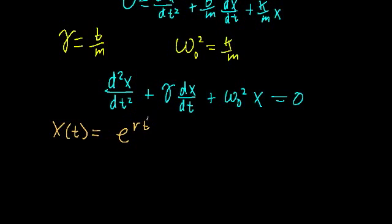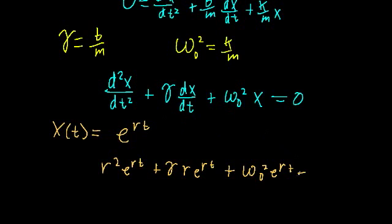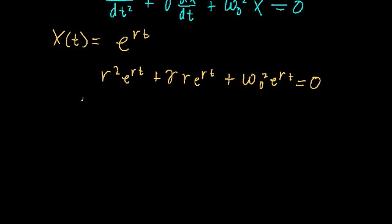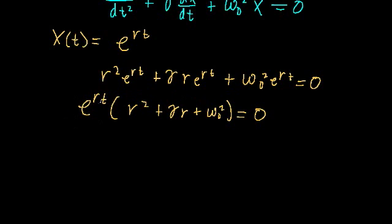So let's plug this in here, try and find a value of r that will help satisfy this differential equation. So if we do, we get the second derivative, r squared e to the rt plus gamma times the first derivative, r e to the rt plus omega naught squared times our e to the rt. That's equal to zero. We can factor out an exponential term and get r squared plus gamma r plus omega naught squared is equal to zero. And we recognize that this exponential can never be zero for all values of t. So we get our characteristic equation, r squared plus gamma r plus omega naught squared is equal to zero.